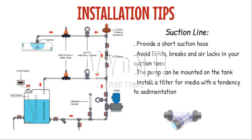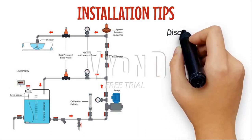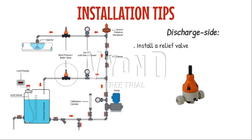Construct the suction line with a filter for media that tends to settle, keeping the suction valve a few millimeters above the potential level of sedimentation. Install a calibration chamber to allow precise site calibration and evaluation of a pump's output for discharge. Installing a relief valve right after the pump discharge will shield the dosing pump in the discharge line from excessive pressure buildup. The counter pressure at the injection point and the dosing medium's pressure at the pump suction valve must have a positive pressure difference of at least one bar; if this cannot be assured, install a pressure loading valve in the discharge line.